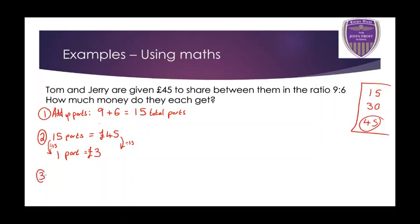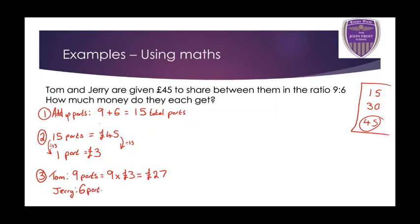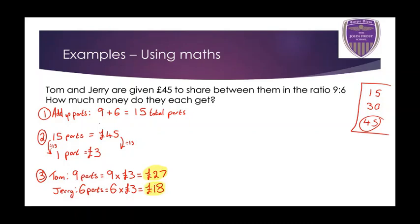Now the final step: how much does Tom get? Tom gets 9 parts, so 9 times 3 pounds is 27 pounds. How much does Jerry get? Jerry gets 6 parts, so 6 times 3 pounds is 18 pounds. Double check: 27 and 18 add up to 45 pounds — yes they do. So Tom gets 27 pounds and Jerry gets 18 pounds.